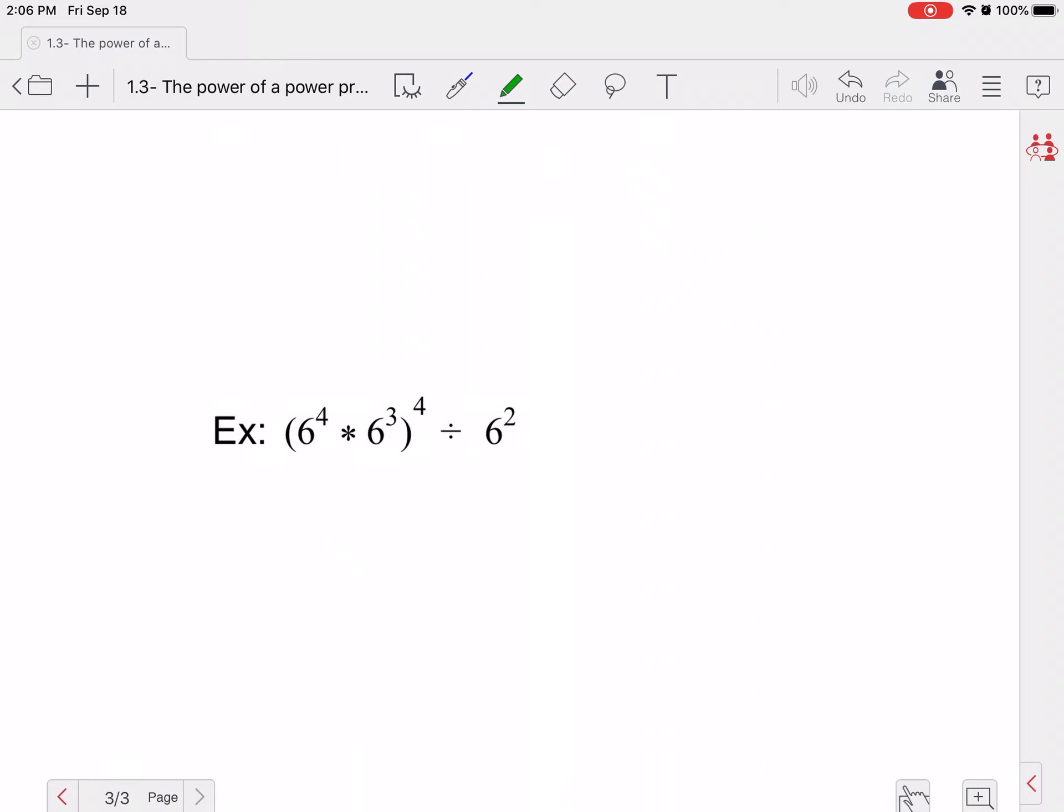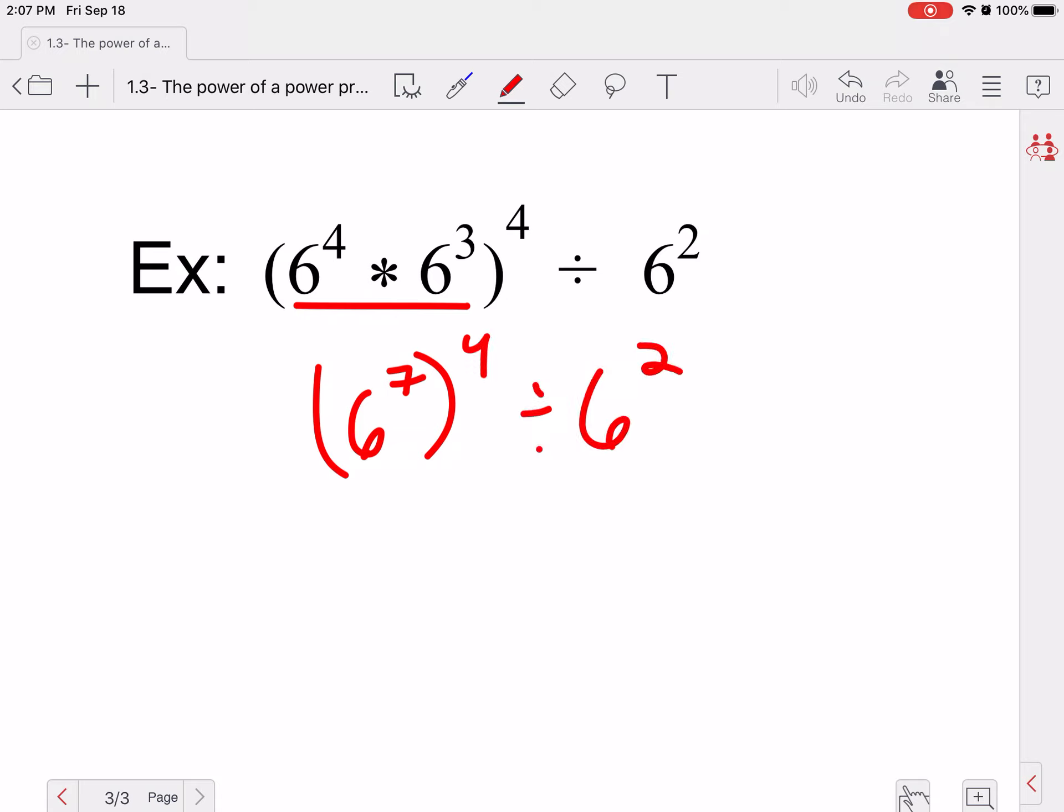If we look at this next one, we got a lot going on here. So I'm going to go ahead and do the inside. So six to the fourth times six to the third would be six to the seventh all to the fourth divided by six squared. Notice whatever I'm not using, I'm bringing right on down.